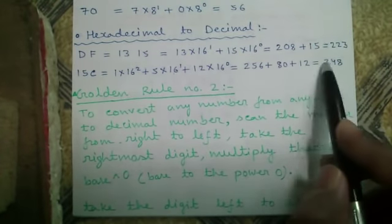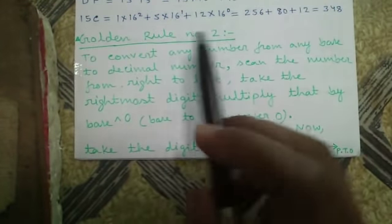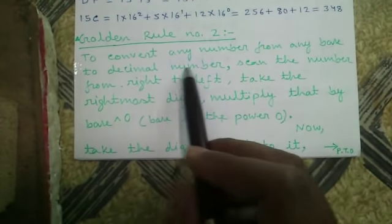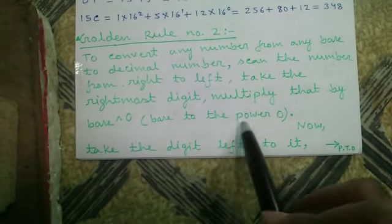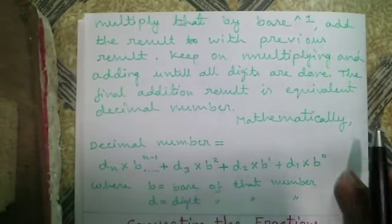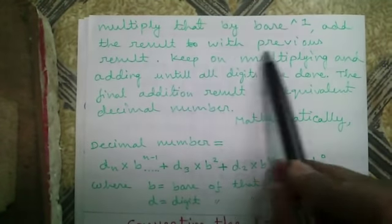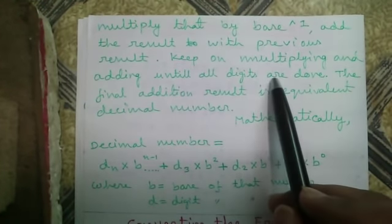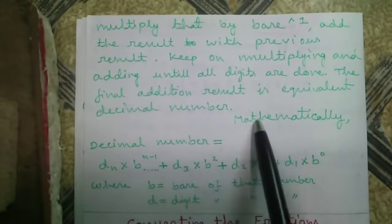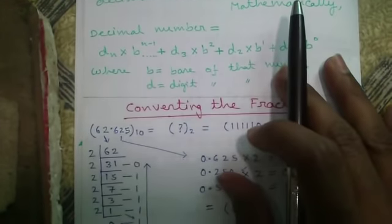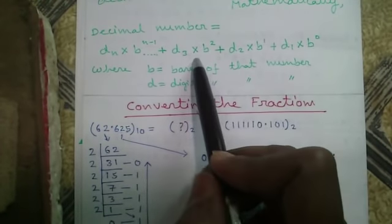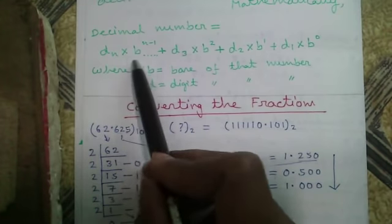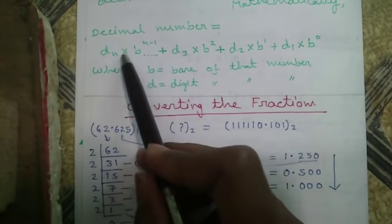Golden Rule Number 2: To convert any number from any base to a decimal number, scan the number from right to left. Take the rightmost digit and multiply by base to the power 0. Take the next digit left and multiply by base to the power 1. Keep multiplying and adding until all digits are done. The final sum is the equivalent decimal number. Mathematically: decimal = d1×b⁰ + d2×b¹ + d3×b² + ... + dn×b^(n-1), where n is the number of digits in the source number.